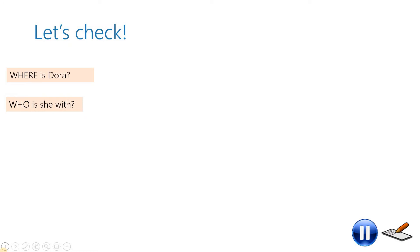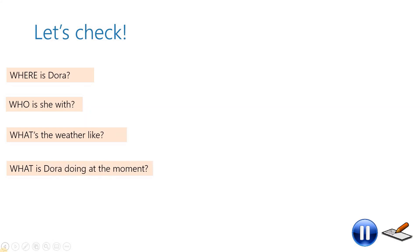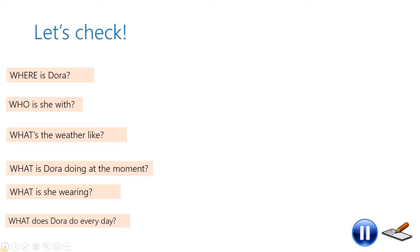Have you finished? Let's check. Here are the questions: Where is Dora? Who is she with? What's the weather like? What is Dora doing at the moment? What is she wearing? What does Dora do every day? If you want, you may answer the questions — pause the lesson again and write the answers in your notebooks.